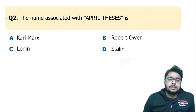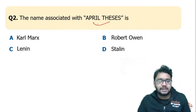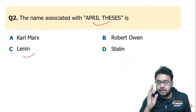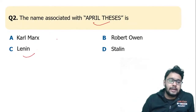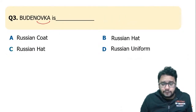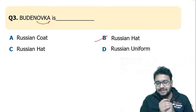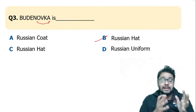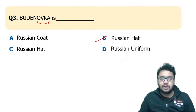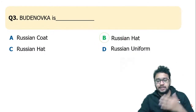The name associated with the April Thesis — April Thesis was given by Lenin, right after the decline of the Czar's regime in Russia. So Lenin, option C, is the correct answer. Next, Budenovka — it was simply a Russian hat. When Lenin came to Russia to establish the Bolshevik government, the Budenovka hat was issued to the Russian police as their new uniform.